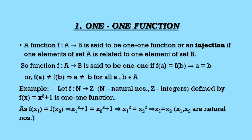Let us see one example of a one-one function. Suppose F is a function from N to Z, where N stands for natural numbers and Z stands for integers, and the rule of the function is f(x) = x² + 1. Let us see whether it is one-one or not. Suppose we take two natural numbers x₁ and x₂, and assume f(x₁) = f(x₂). This implies x₁² + 1 = x₂² + 1, so 1 cancels from both sides, leaving x₁² = x₂².